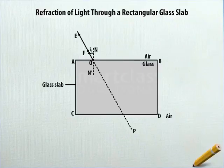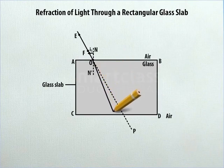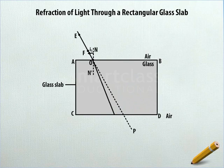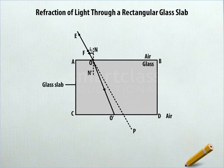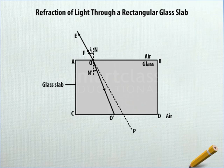From O, and to the right of O and N', draw a slanting line to meet CD at a point to the left of the dotted line OP. Label the point where the line meets CD as O' in uppercase. Draw an arrowhead on OO' pointing towards O'. Now between the line segments ON' and OO', draw an arc to indicate the angle of refraction at the first surface and label it as R1.